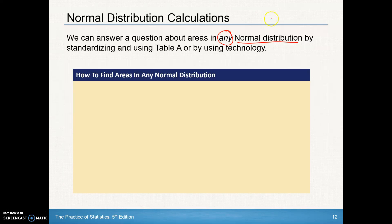The key here is that many times our normal distributions aren't always standard. Remember, a standard distribution is when our mean is 0 and our standard deviation is 1. We can use Table A to help answer any of those questions, but most of the time they aren't standard normal, so we have to standardize our mean, standard deviation, and any score we're looking for in order to use Table A.